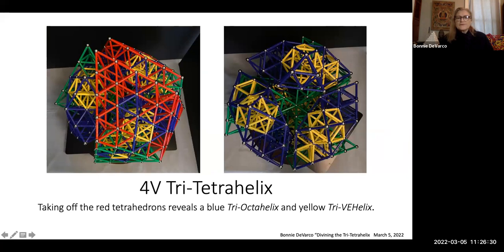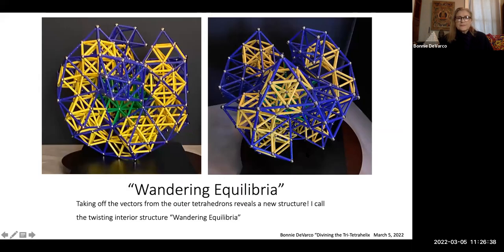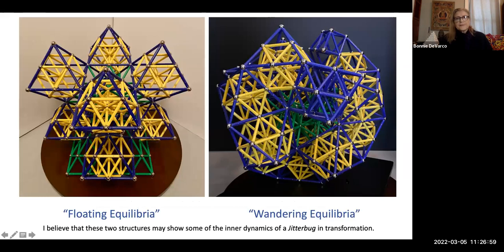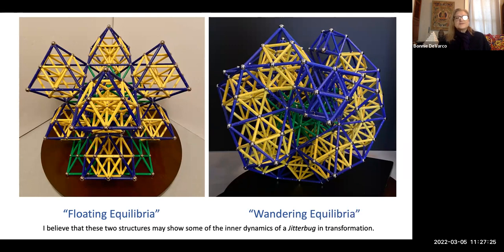Here's the top view of the tri-tetrahelix — three helixes coming together, fully nested, starting to take them apart — then wandering equilibria, where you can start to see the way that this interior armature of nested VEs and octahedra come together to create the structure you see when the tets are fully present. And finally, the floating equilibria and wandering equilibria side by side: the right has the twist, the left is very symmetrical and goes out in all directions — does exactly what a VE does. But it's the tetrahelix and the combination of tetrahelixes that I think really speak to that internal and external dynamics, the structural propensity that's in both.